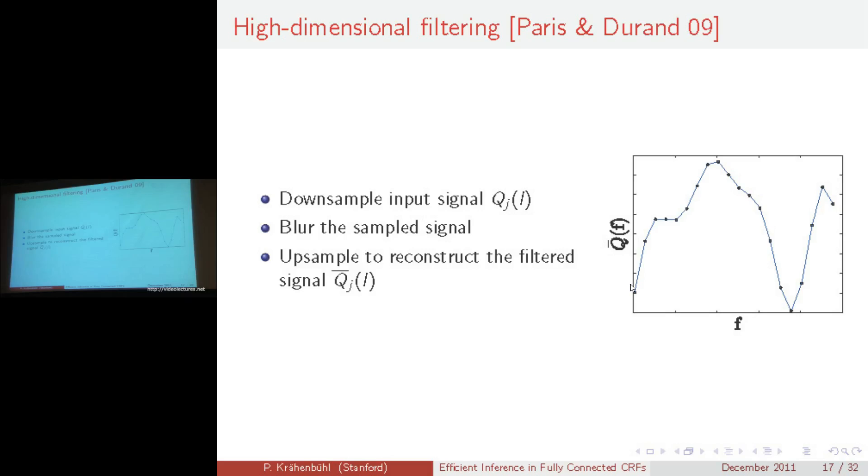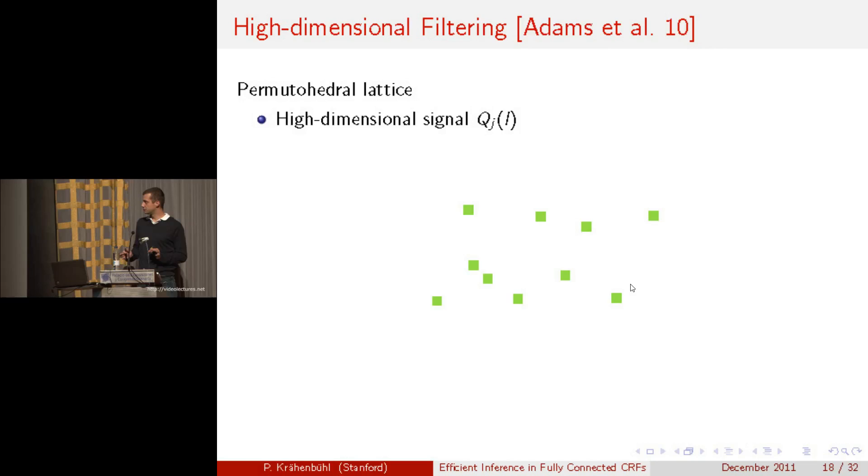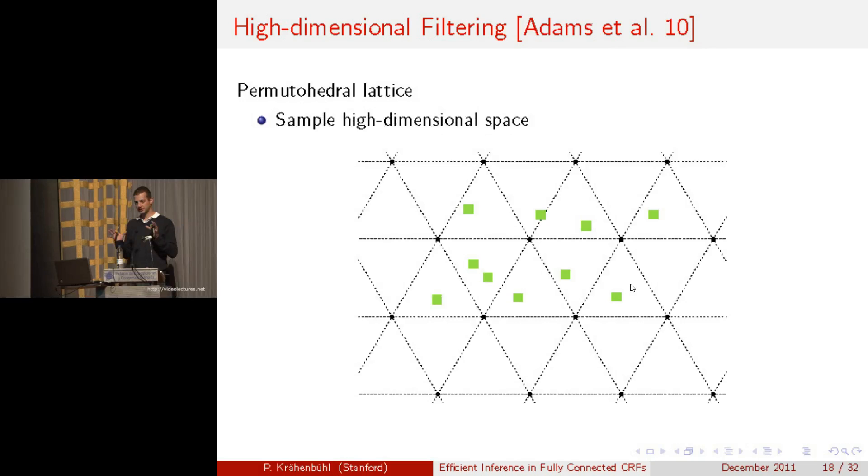Sampling in an arbitrary high dimensional space is not trivial, and it actually, the naive sampling requires an exponential number of samples, exponential in the number of dimensions. This is known as the curse of dimensionality. This is why Adams et al. proposed the Permutohedral lattice, which can take an arbitrary high dimensional input signal, shown in green here, and then tessellates the space around that input signal into regular simplices. Then for every point on the high dimensional input signal, it looks at the enclosing simplex, distributes its value onto this enclosing simplex, then blurs the values on the simplices along each dimension of the discretization, and then upsamples the signal again by looking at the enclosing simplex and using linear interpolation.